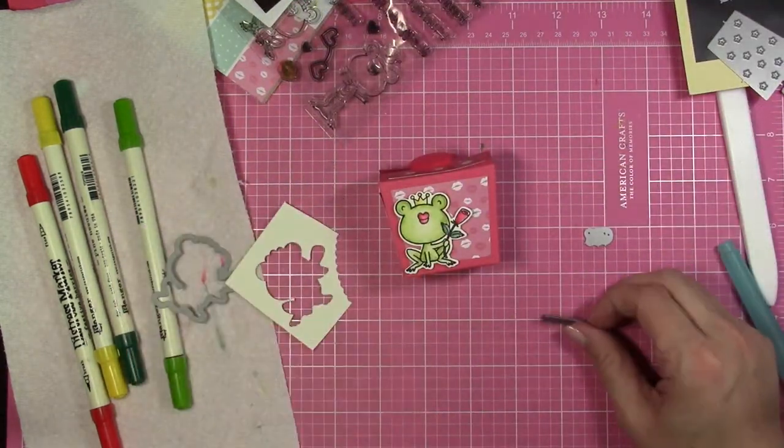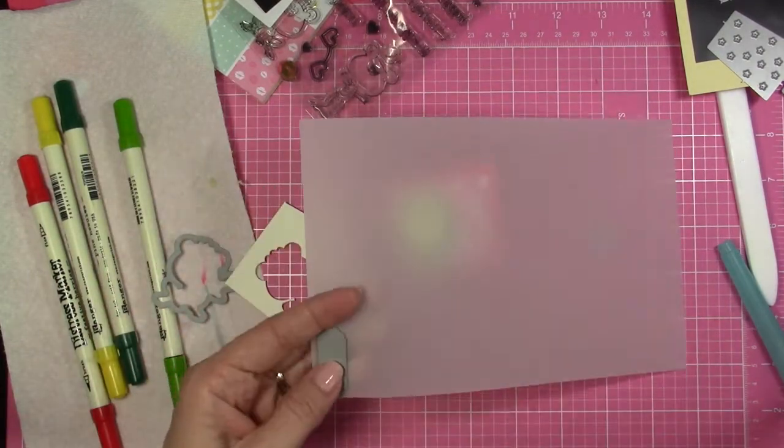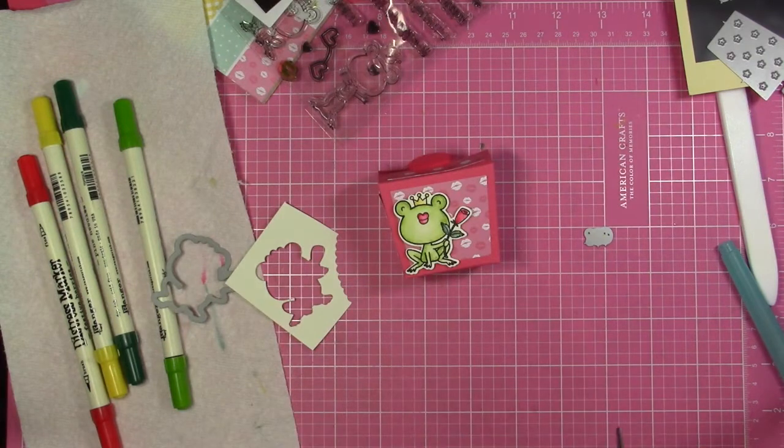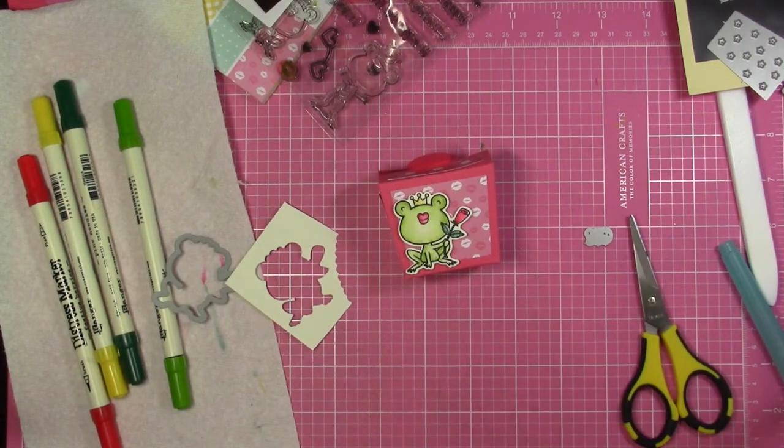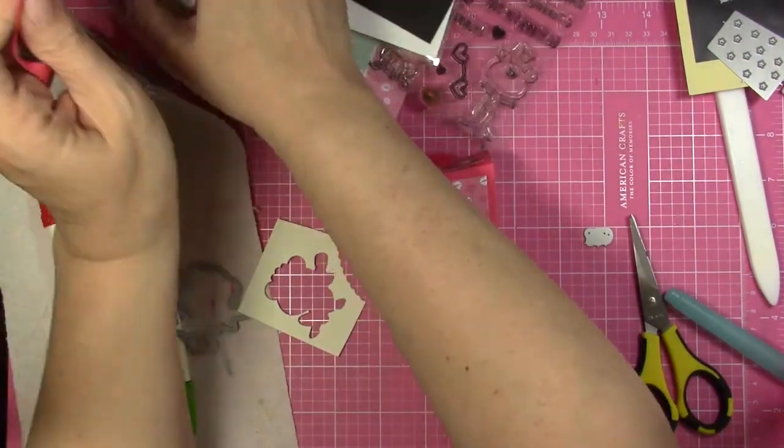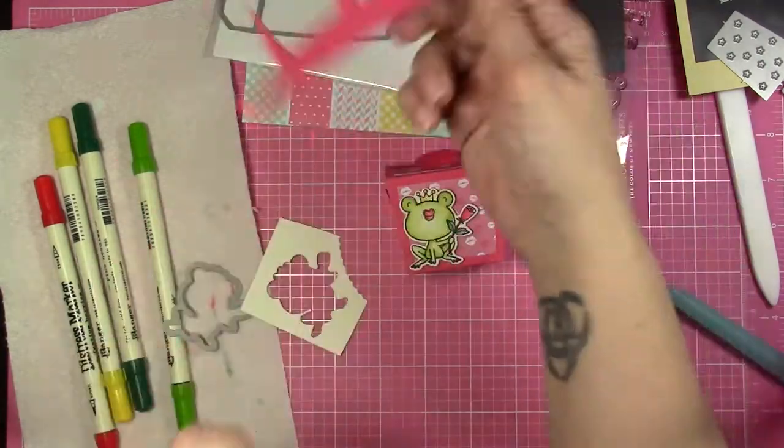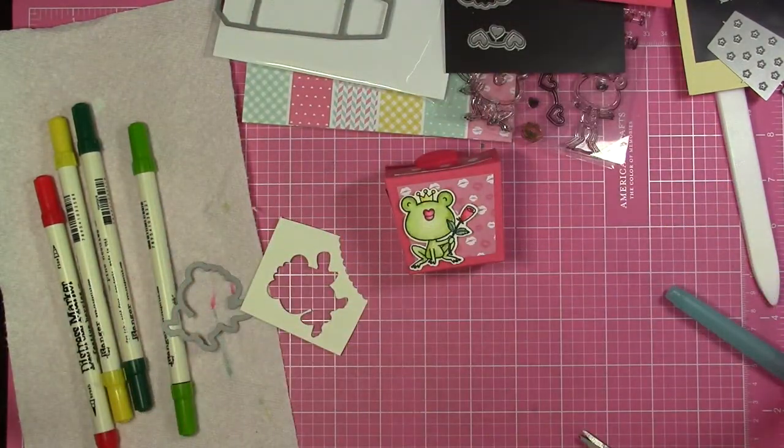So I'm going to use a piece of vellum to die cut the tag and then I'm going to use the same color cardstock that I used for the box, the rose colored cardstock, and I'm going to cut out two of the XOs and I'm just going to run that through my Big Shot to do that with. This is a good thing where scrap paper comes in handy.